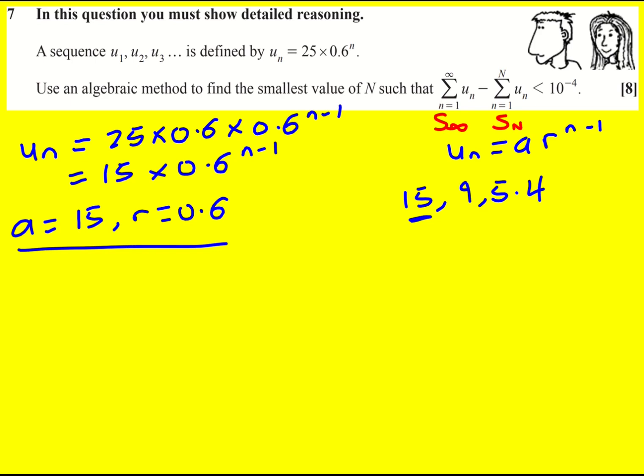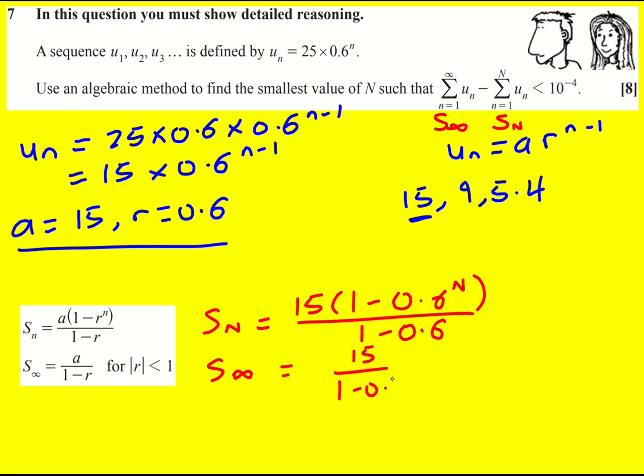So we're given a couple of formulae in the formula book that will help us with that. I'm not going to prove them here but here they are. So s capital n to start with is going to be my a, 15, times by 1 minus r, which is 0.6 to the capital n, all over 1 minus 0.6. And then s infinity, this is valid because the modulus is less than 1, is then going to equal just 15 over 1 minus 0.6 again.